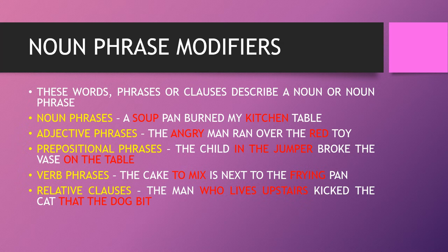Prepositional phrases also function as noun phrase modifiers — 'the child in the jumper broke the vase on the table.' They begin with prepositions. Verb phrases: 'the cake to mix is next to the frying pan' — 'to mix' is an infinitive and 'frying' is a gerund. Relative clauses: 'the man who lives upstairs kicked the cat that the dog bit' — 'who lives upstairs' and 'that the dog bit' are relative clauses modifying nouns. Fancy expressions, but simple in use.